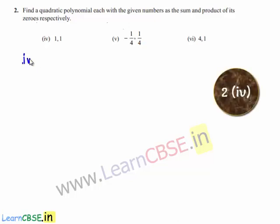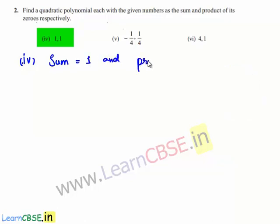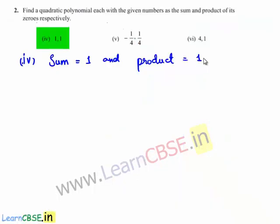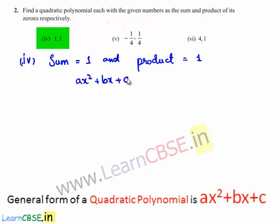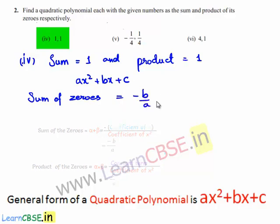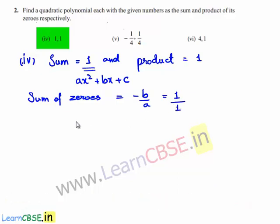Coming to the fourth bit, the sum of the zeros given is 1 and the product of zeros is also equal to 1. Let the quadratic polynomial be ax² + bx + c. We know that the sum of zeros is equal to -b/a, and the given sum is 1, which can be written as 1/1. By comparing, b = -1 and a = 1.